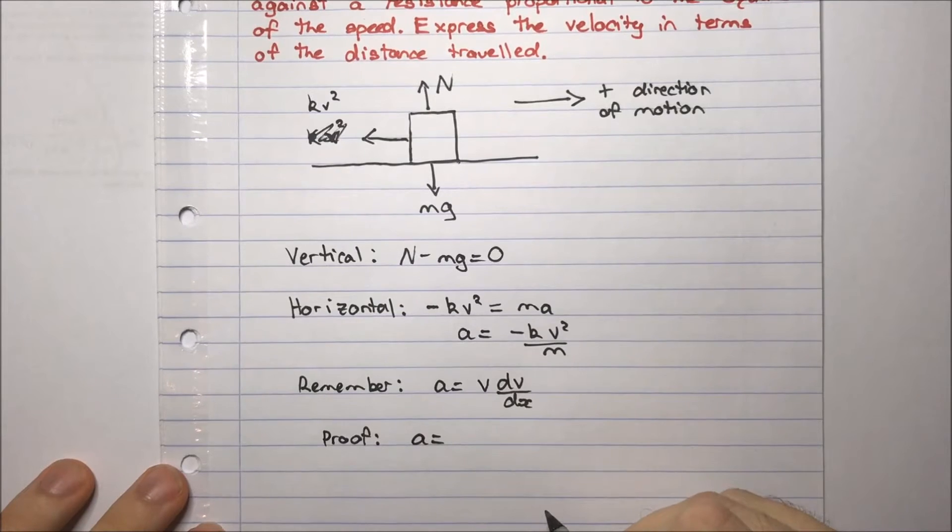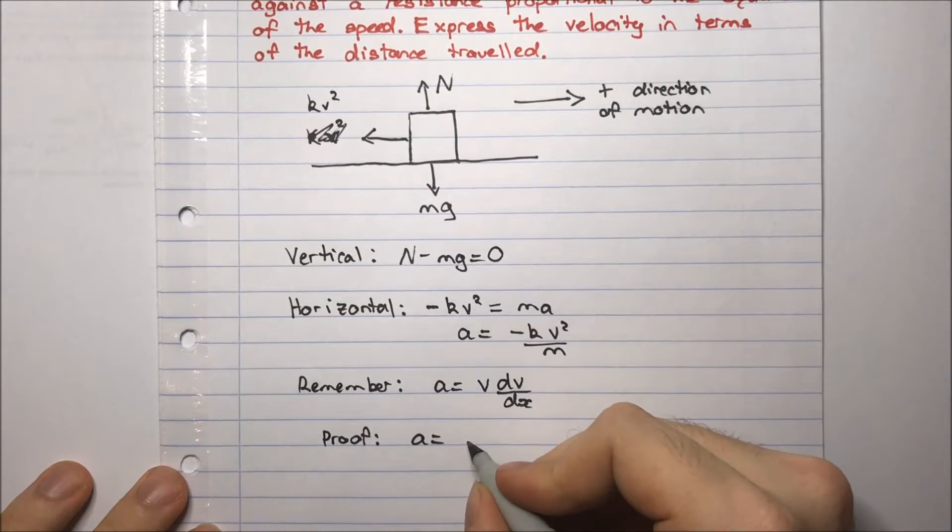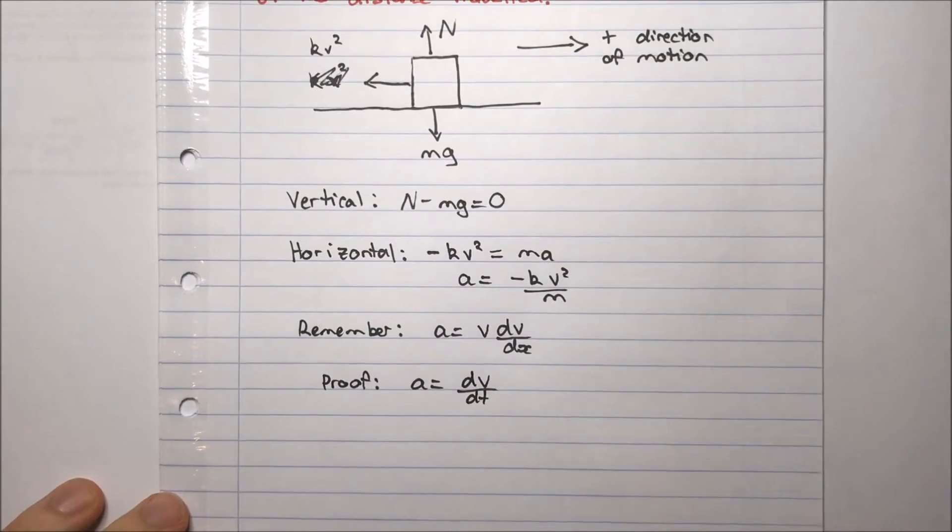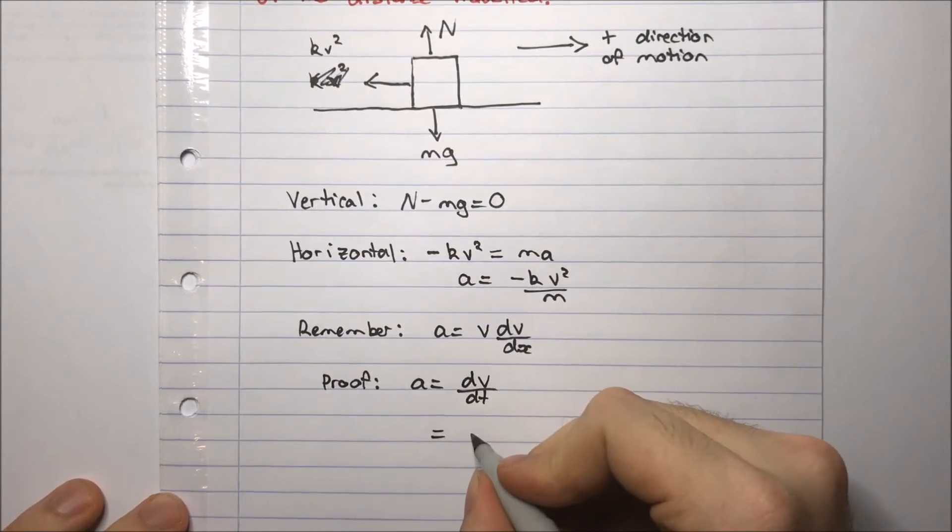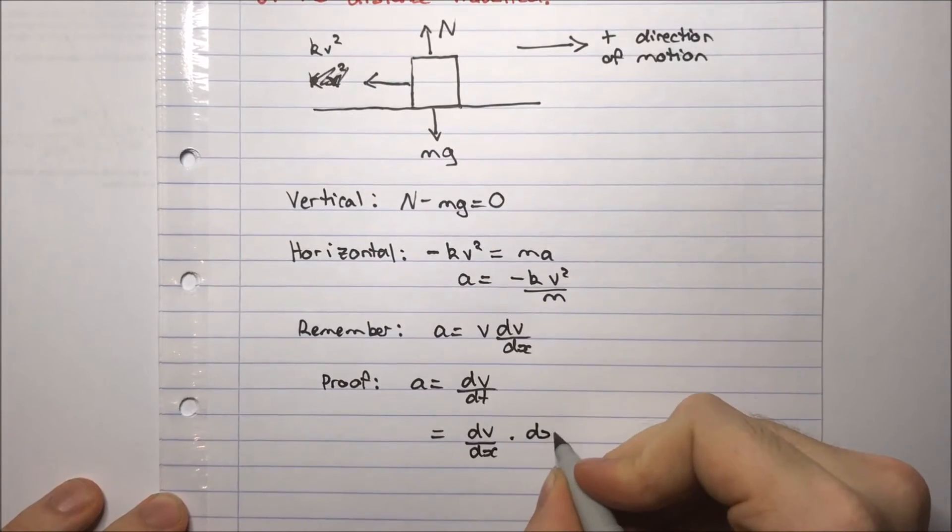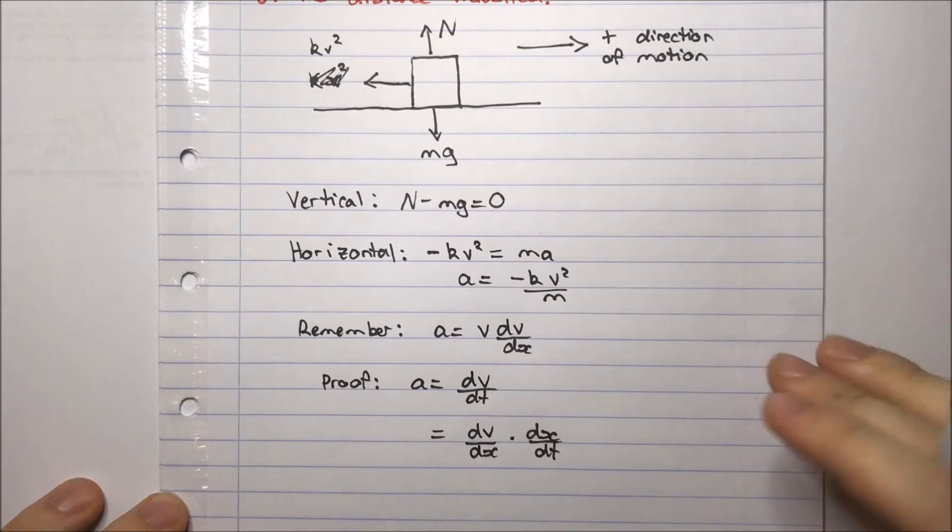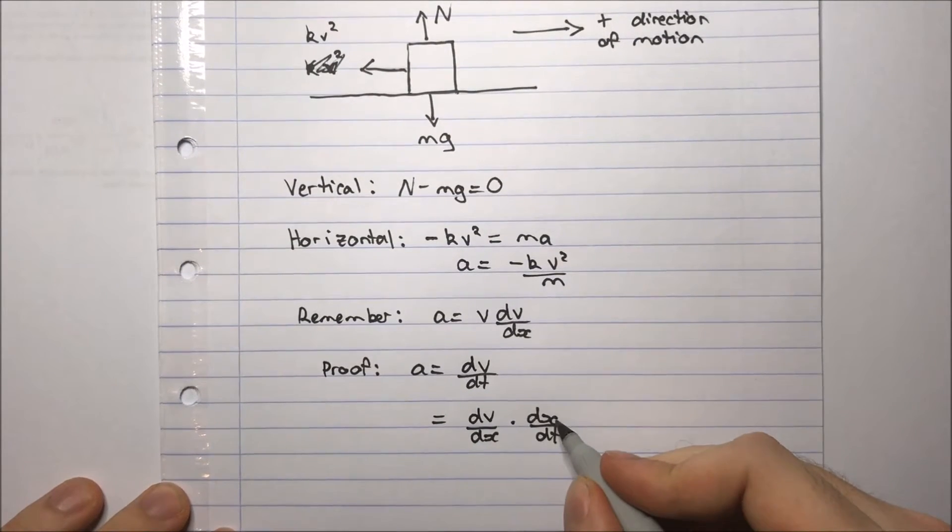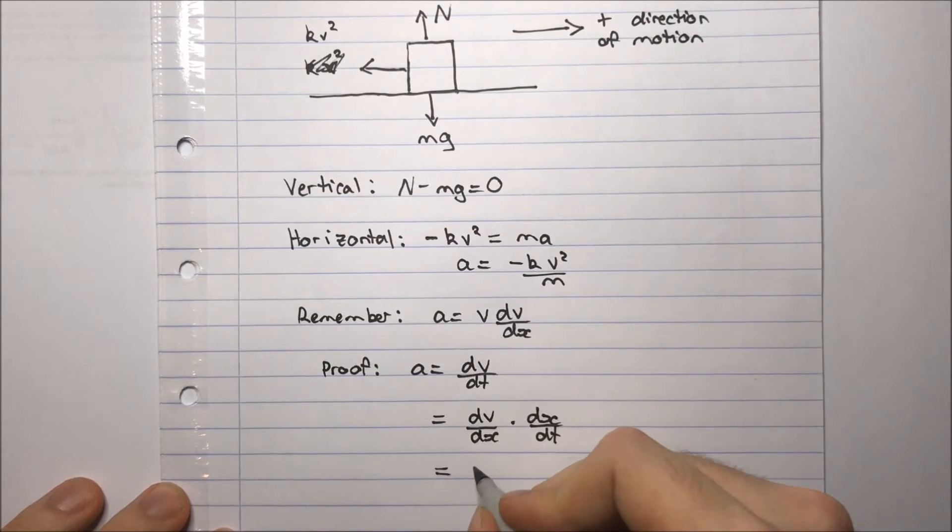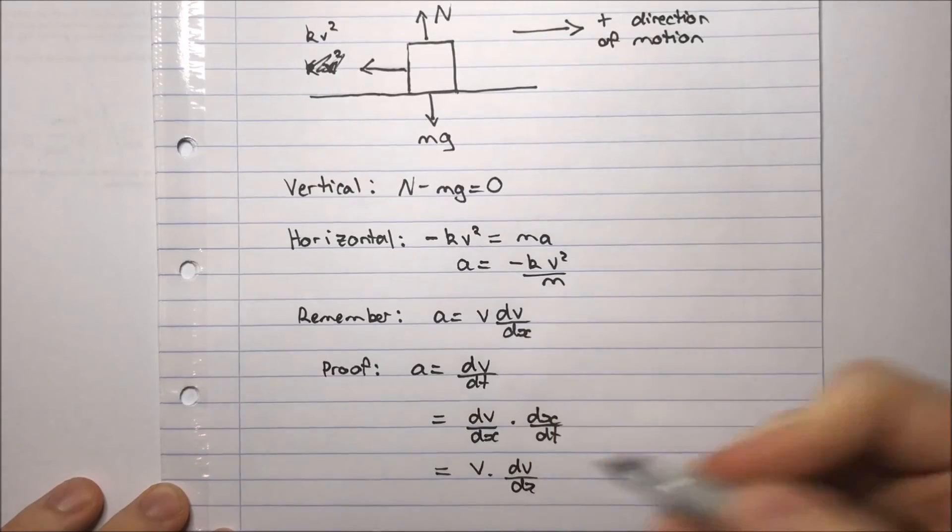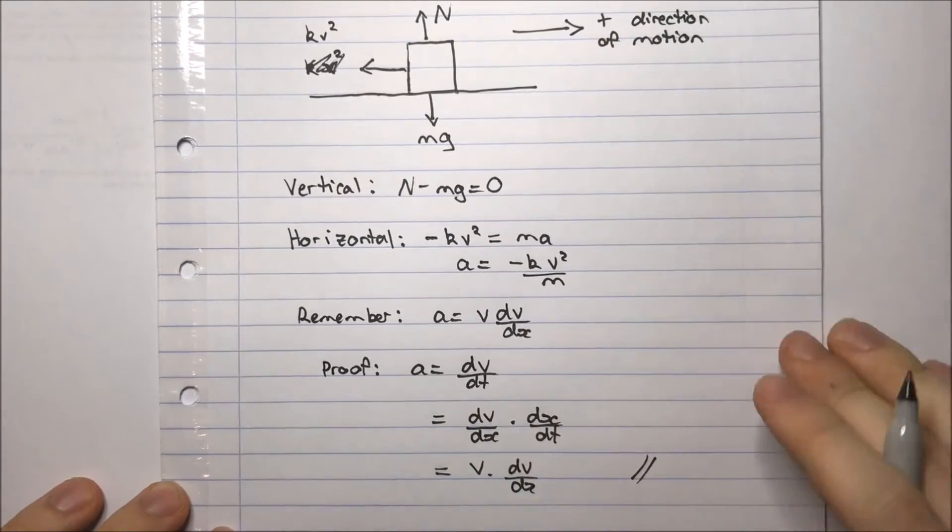Acceleration, well we know that's the second derivative of displacement, but it's also the first derivative of velocity with respect to time. And then we can use the chain rule, which is dv/dx times dx/dt. So that's just by the chain rule. But what's dx/dt? That's the first derivative of displacement with respect to time. We know that's velocity. So velocity times dv/dx. And we have what we want.